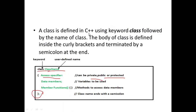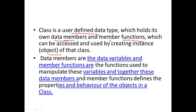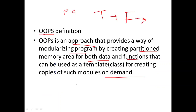A class is a user-defined data type containing data members and member functions, and an object is an instance of this class. We can remember this with the example of a plan and a building — the plan is the class, containing things like data members and member functions (windows, doors, floor), while the object is the real-world application. By instantiating an object, we can access the members of the class.